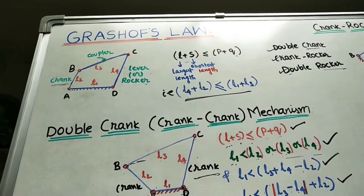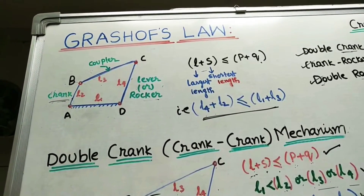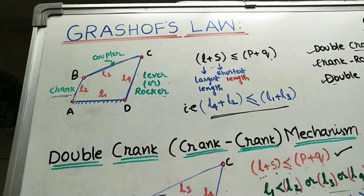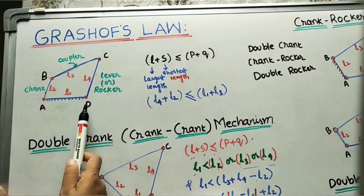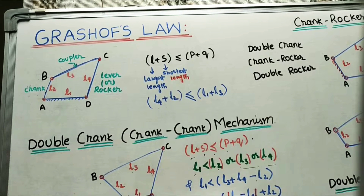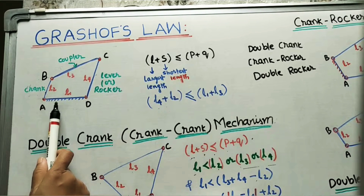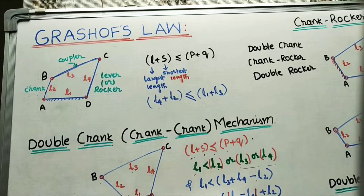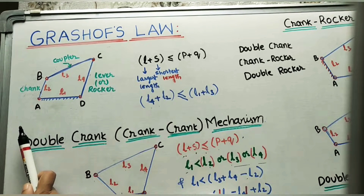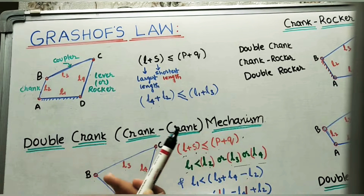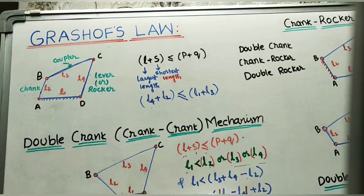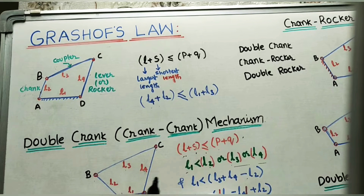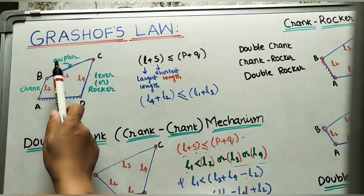For explaining Grashof's law, we are taking a four bar chain with four links: A, B, C, D. This four-link assembly is called a kinematic chain, and when one of the links is fixed, it is called a mechanism. We fix one link so that the other three links move in one definite direction — this definite motion is called constrained motion, or successfully constrained motion.